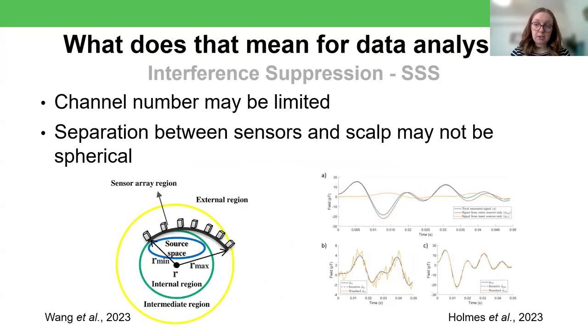So how have people tried to overcome these issues? Well, on the left here is an example of a paper where they've optimized the origin of the SSS coordinate system and the number of parameters used to model the internal and external spaces in order to gain a stable solution for an OPM system. On the right is an alternative solution where they've iteratively updated the weighting of the different model components for the internal and external spaces, again, in order to achieve a stable solution.